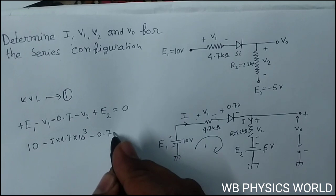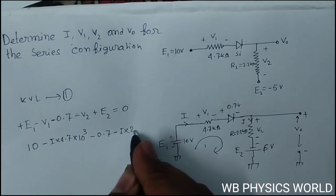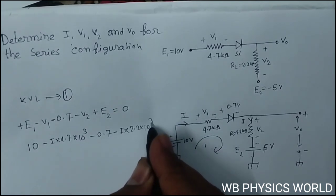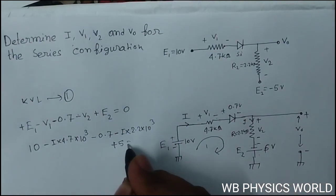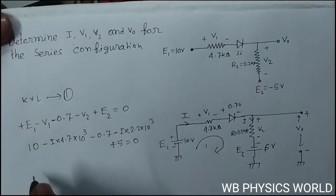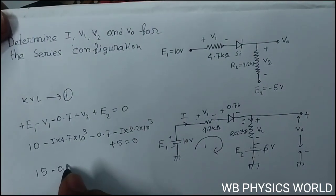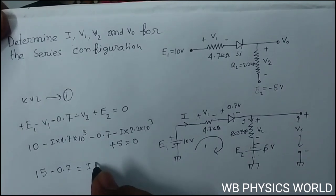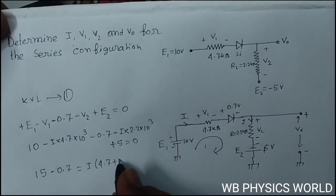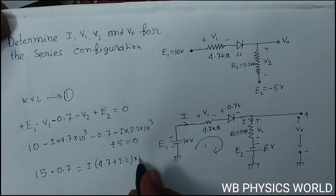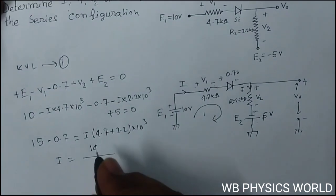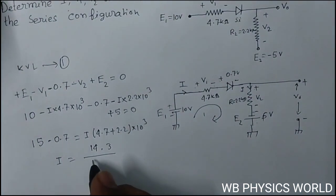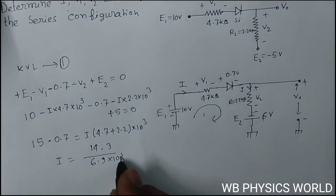For V2, minus I into 2.2 into 10 to the power 3, and for E2 plus 5, equal to 0. So this gives 15 minus 0.7 equal to I into 4.7 plus 2.2 into 10 to the power 3.